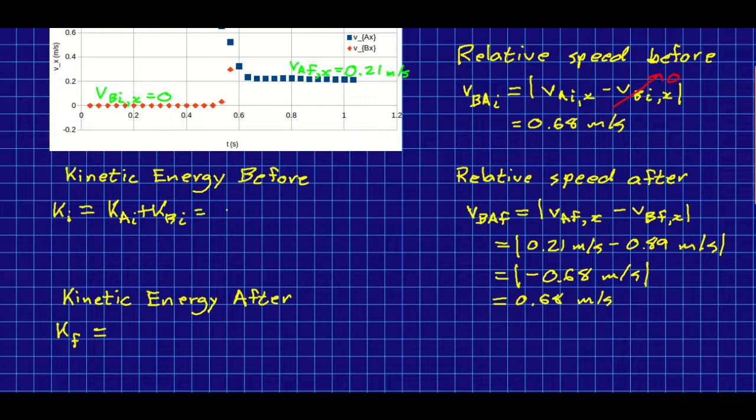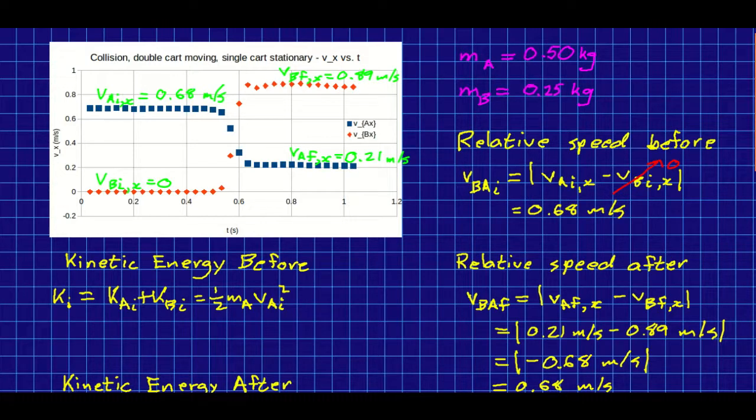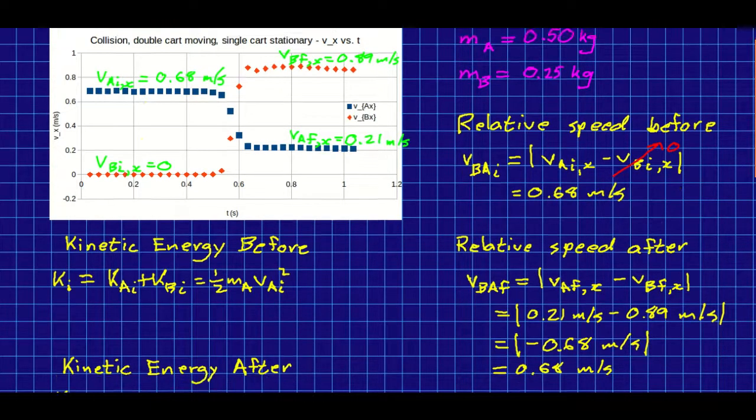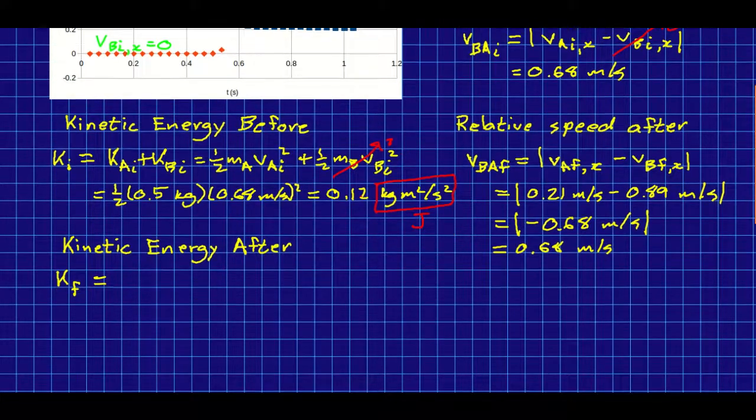And the initial speed squared of A—but that speed is easy, A is just moving along the x-axis and so its speed just is its x component of velocity. And if you try that out, you'll find it comes out to about 0.12. And look at the units: that's kilogram meters squared per second squared, and this kilogram meters squared per second squared is joules. That's the definition of joules.